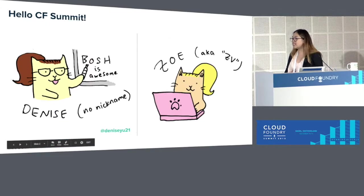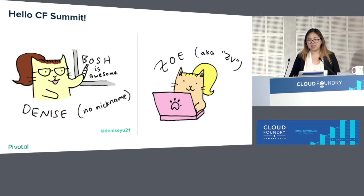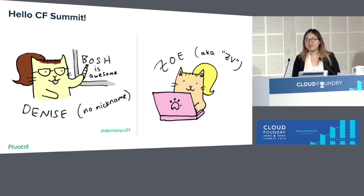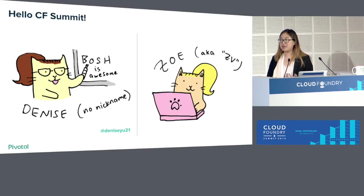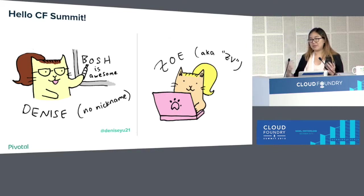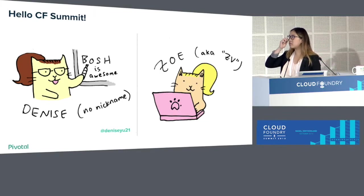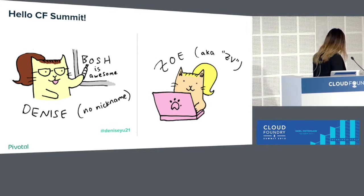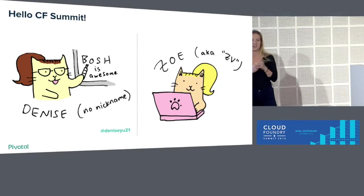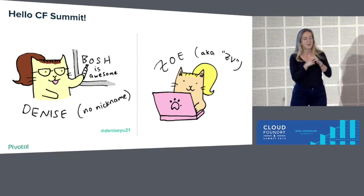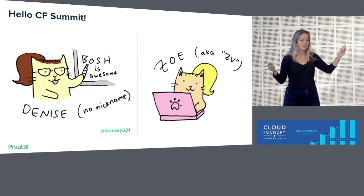My name is Denise. I work as an engineer on the Bosh team in Toronto. I was the product manager for six months of the services enablement team, which is the team that builds and maintains a component called the on-demand service broker that we will tell you more about. And I'm Zoe. I am the product manager for RabbitMQ for Pivotal Cloud Foundry, and was previously the product manager for Redis for Pivotal Cloud Foundry, which are both Bosh Deployed Services.